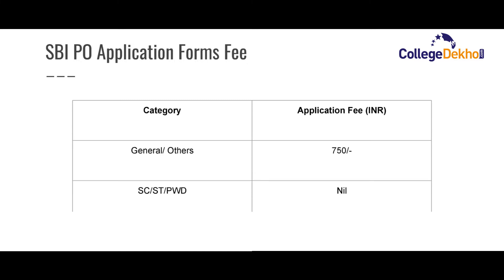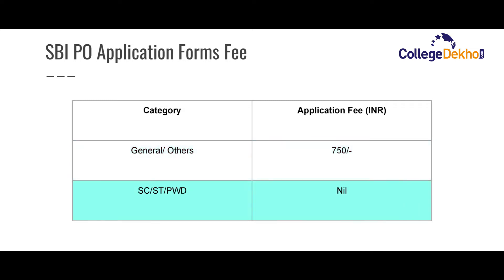Now let us look at the application fee for SBI PO. The fee is different for general and reserved category candidates. For general and other category candidates, the application fee is ₹750 including all charges. For SC, ST, PWD and other reserved candidates, there is no application fee — that is zero application fee for SBI PO.